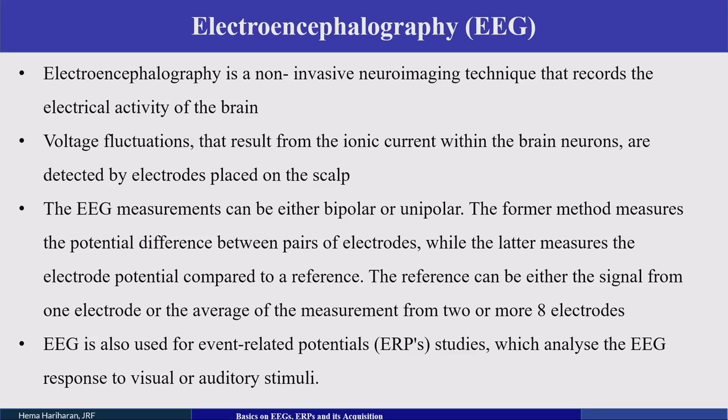Because there is a potential difference to calculate, a ground is required so that electric current does not affect the body. Based on the comparison or potential difference between the active, reference, and ground electrodes, we measure the EEG channels. EEG recordings can have 8, 64, or more electrode channels placed all over the scalp.